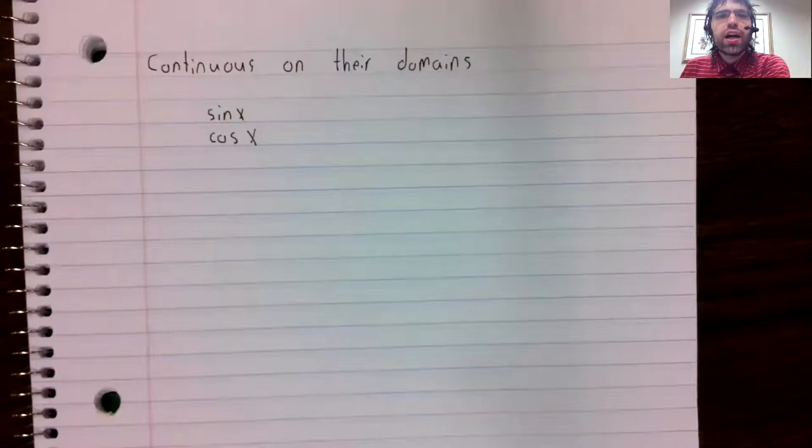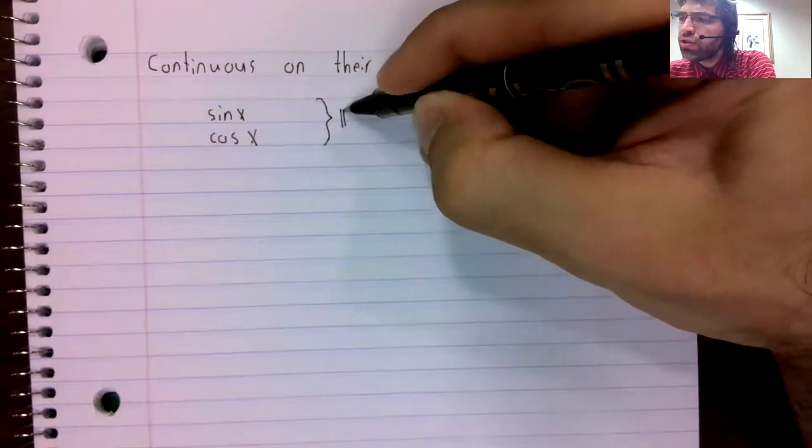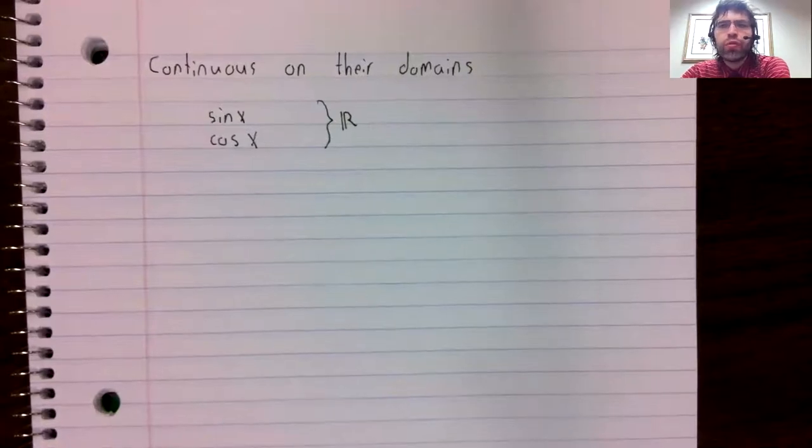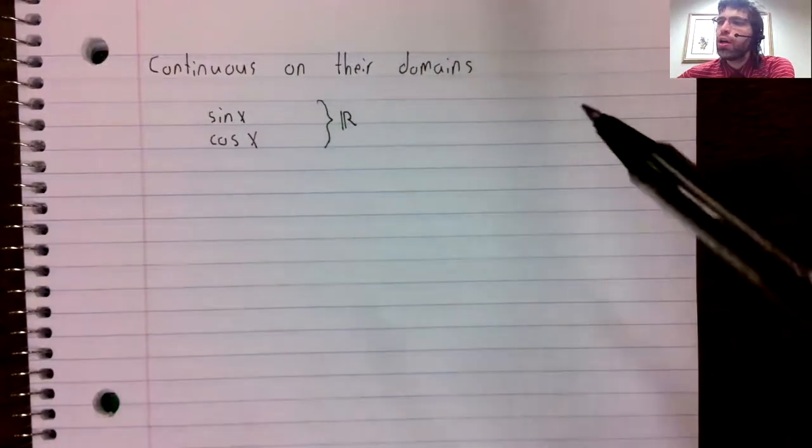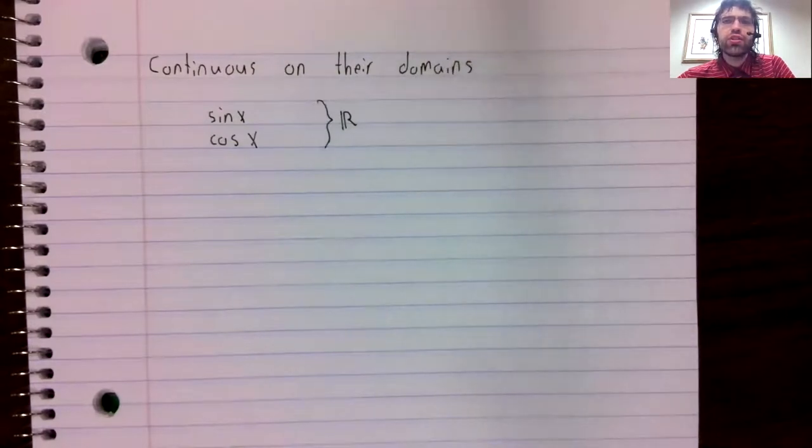Now sine and cosine have as their domains all of the real numbers, so these are continuous at every real number. The other four trig functions aren't continuous everywhere because they're not defined everywhere, but where they're defined, they're continuous.